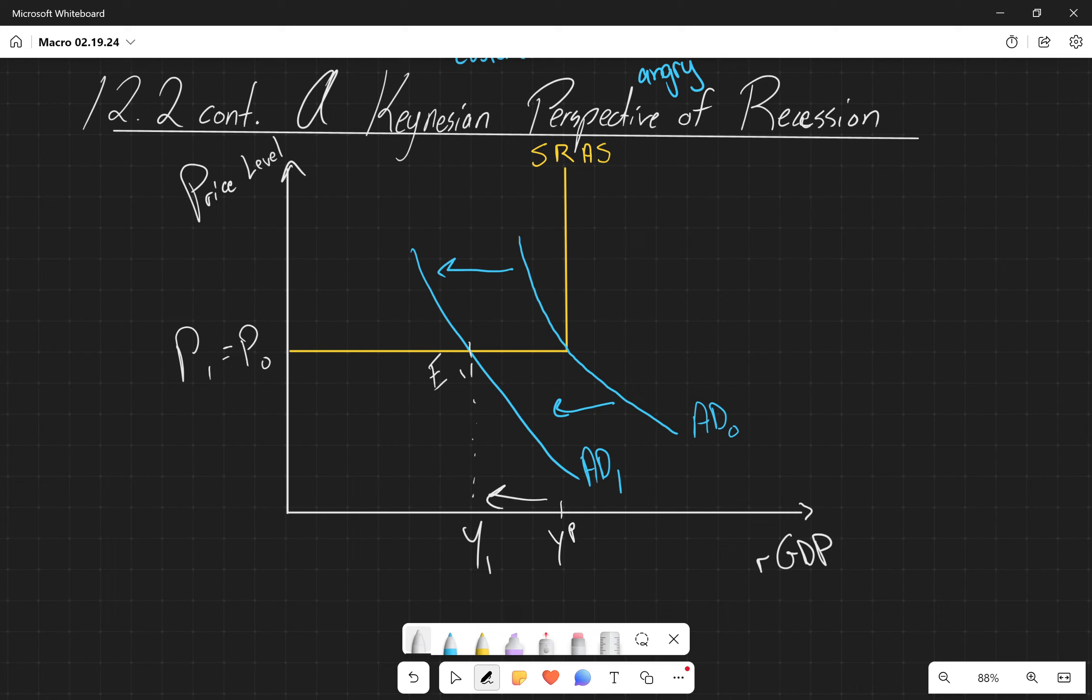So in Keynes' mind, when you're experiencing a recession, the only thing you can do is to stimulate aggregate demand. And since the government can stimulate aggregate demand, how? Remember, aggregate demand is nothing more than Y, which is nothing more than C plus I plus G plus NX. And so G is one of the components of this aggregate demand curve. And so if the government stimulates demand, then this aggregate demand is going to increase as well.